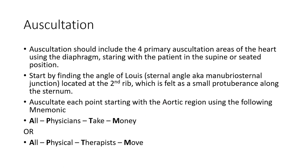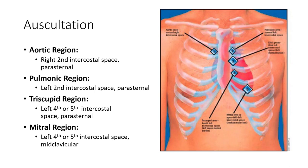We auscultate starting with the aortic region, on the right second intercostal space, parasternal border, followed by the pulmonic on the left parasternal border, second intercostal space, followed by the tricuspid space at the fourth intercostal space - you could also use a fifth depending on the anatomy - parasternal border.